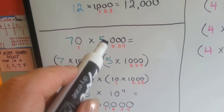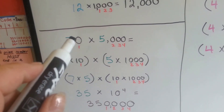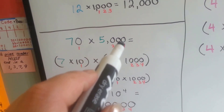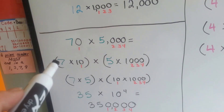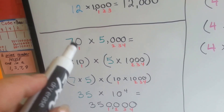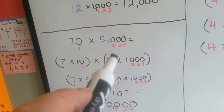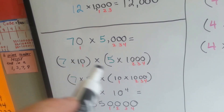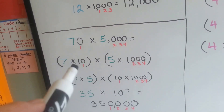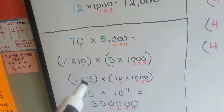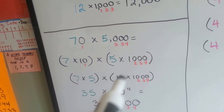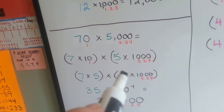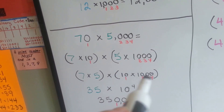Let's try it again: 70 times 5,000. We can break it into 7 times 10 for 70, and 5 times 1,000 for 5,000. We still have our 4 zeros. Now we're going to group the 7 and 5 together and group the 10 and 1,000 together. We still have 4 zeros.